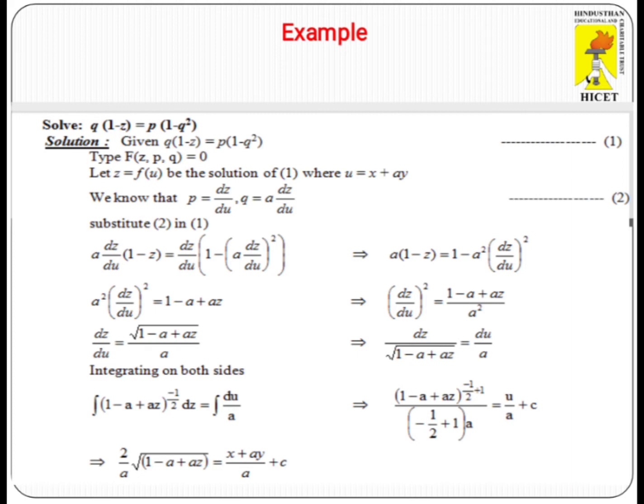After separation, we apply integration on both sides. We get (2/A) times the square root of (1 - A + AZ) equals (X + AY)/A + C, which is the complete integral of the given partial differential equation.